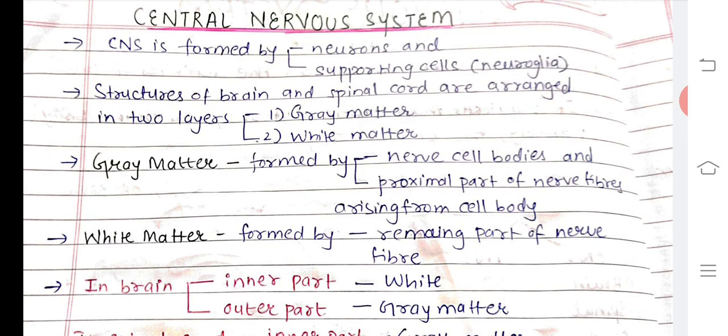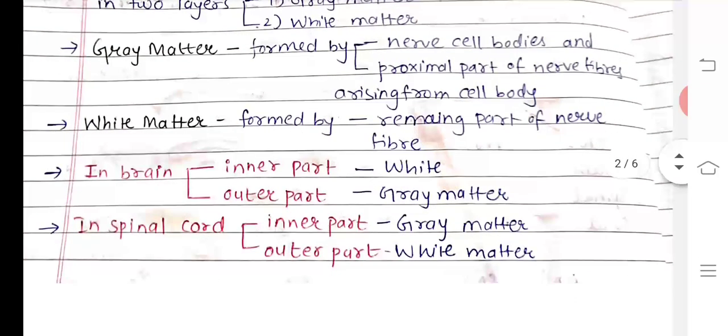Grey matter consists of nerve cell bodies and the proximal part of nerve fibers which arise from the cell body. White matter is made of the other portion of the nerve fiber. In the brain, the inner portion is white matter and the outer portion is grey matter. In the spinal cord, it is the opposite: the inner portion is grey and the outer portion is white.